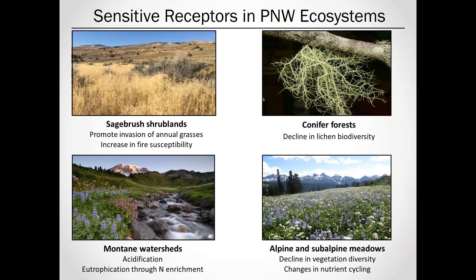While small amounts of nitrogen can have a fertilizing effect and increased productivity in these systems, rates that are too high can have detrimental impacts. These impacts vary depending on the system. Looking at some sensitive ecosystems in the Northwest: in sagebrush shrublands, deposition can promote the invasion of annual grasses, leading to increased fire susceptibility. In conifer forests, you can see loss of nitrogen-sensitive lichen species, leading to declines in lichen biodiversity. In montane watersheds, you can have nitrogen enrichment causing eutrophication or acidification. And in alpine and subalpine meadows, high rates of deposition can cause declines in vegetation diversity and changes in nutrient cycling — that's what I'm going to focus on today.